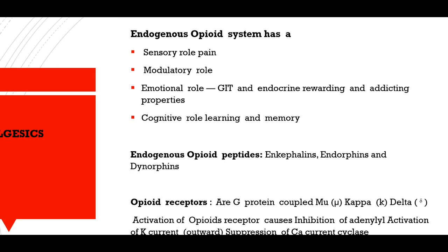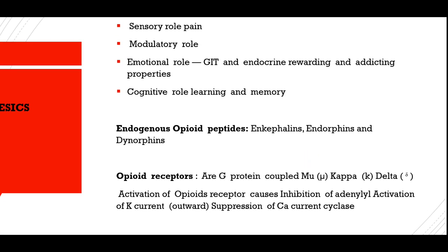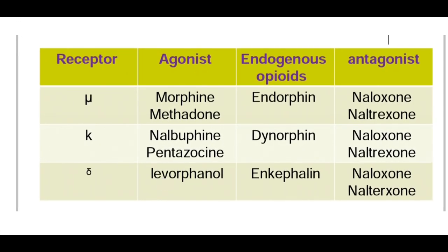The endogenous opioid system has a sensory role in pain, a modulatory role, an emotional role, and a cognitive role. Endogenous opioid peptides include enkephalins, endorphins, and dynorphins. There are three types of opioid receptors: mu, kappa, and sigma. Mu receptor agonists include morphine, methadone, and endogenous endorphins. Kappa receptor agonists include nalbuphine or pentazocine and the endogenous dynorphin. Sigma receptor agonists include levorphanol and endogenous enkephalin. The antagonist for all these receptors is naloxone or naltrexone.